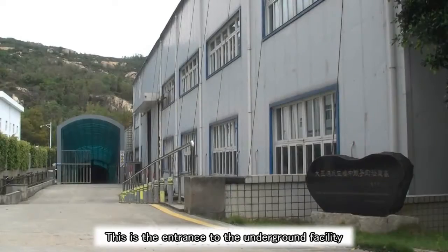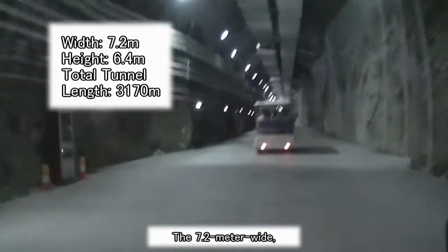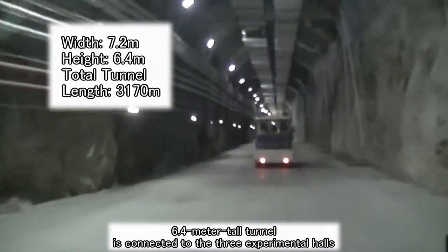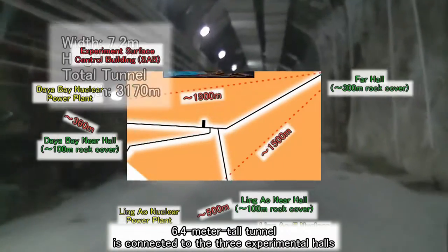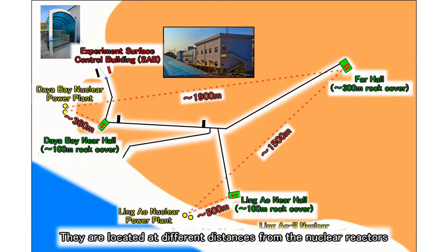This is the entrance to the underground facility. The 7.2-meter-wide, 6.4-meter-tall tunnel is connected to the three experimental halls. They are located at different distances from the nuclear reactors.